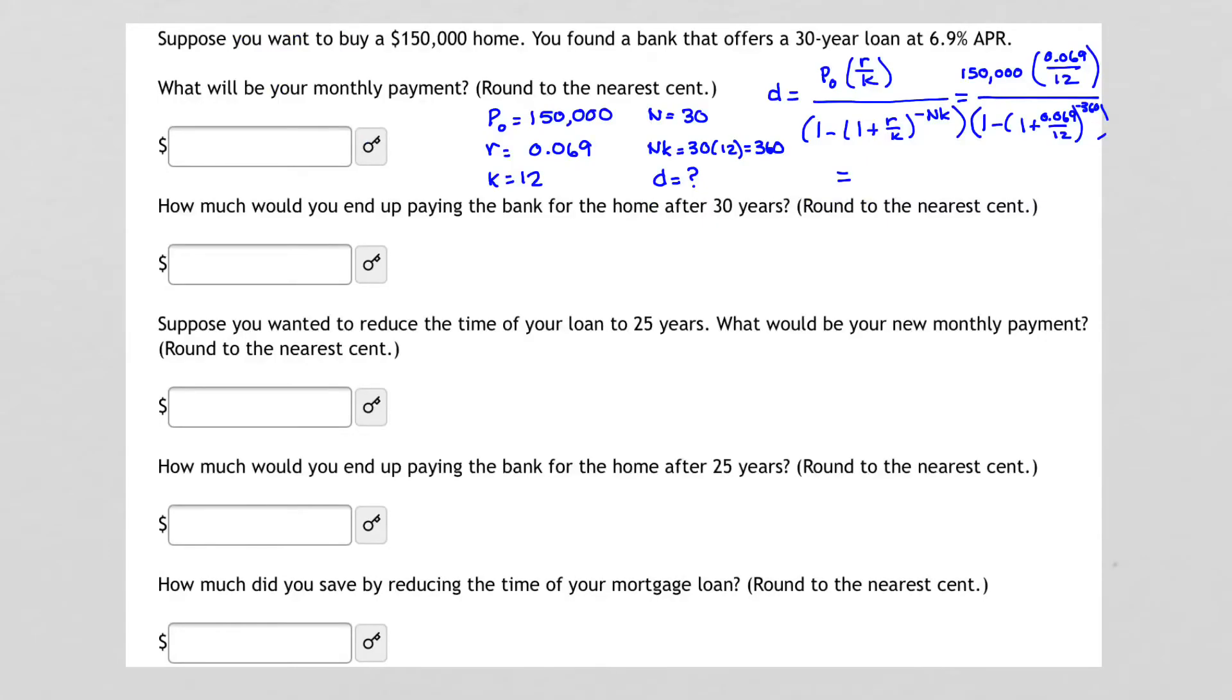So, we're going to write down our scratch work. So, for part A, or our first part, we are evaluating using Desmos to get our monthly payments. This gives us, according to Desmos, that our monthly payments are $987.90. That's for a $150,000 loan at 6.9% for 30 years. So, let's put that in our first box. $987.90.